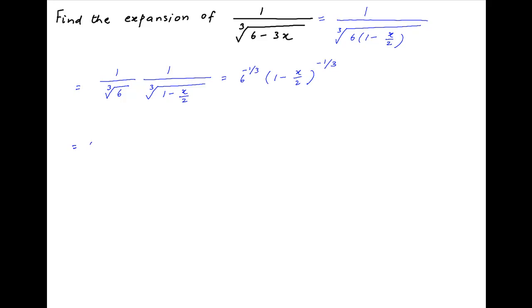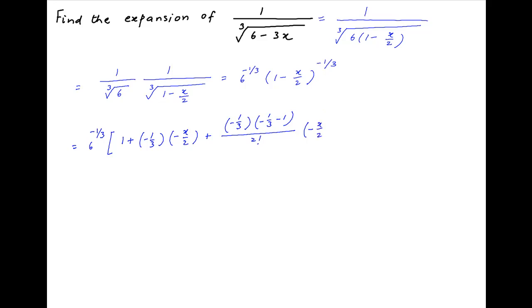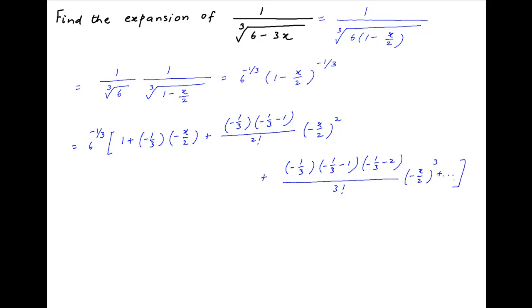Using the binomial theorem, this is equal to 6 raised to the power minus 1 upon 3, times in brackets: 1 plus (minus 1 upon 3) times (minus x upon 2), plus (minus 1 upon 3)(minus 1 upon 3 minus 1) upon 2 factorial times (minus 6 upon 2) squared, plus (minus 1 upon 3)(minus 1 upon 3 minus 1)(minus 1 upon 3 minus 2) divided by 3 factorial times (minus 6 upon 2) cubed, plus and so on.